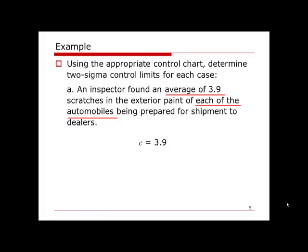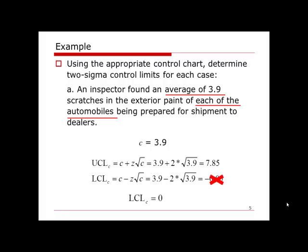The given number tells us that c equals 3.9, so we can substitute everything into the formula. This example asks us to calculate two-sigma control limits, so z equals to 2. We do the calculation and find the upper control limit equals to 7.85 and lower control limit equals to negative 0.05. This number cannot be used as lower control limit because for any counting result, the output can never be negative. When we see any negative value, we automatically set the lower control limit as zero.